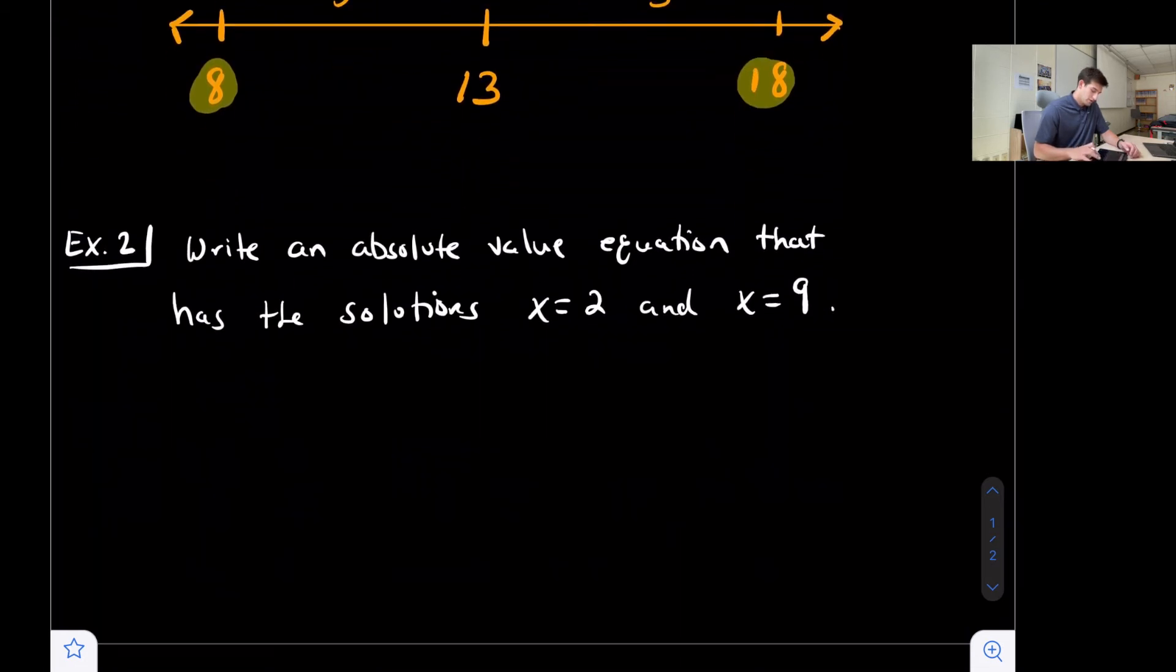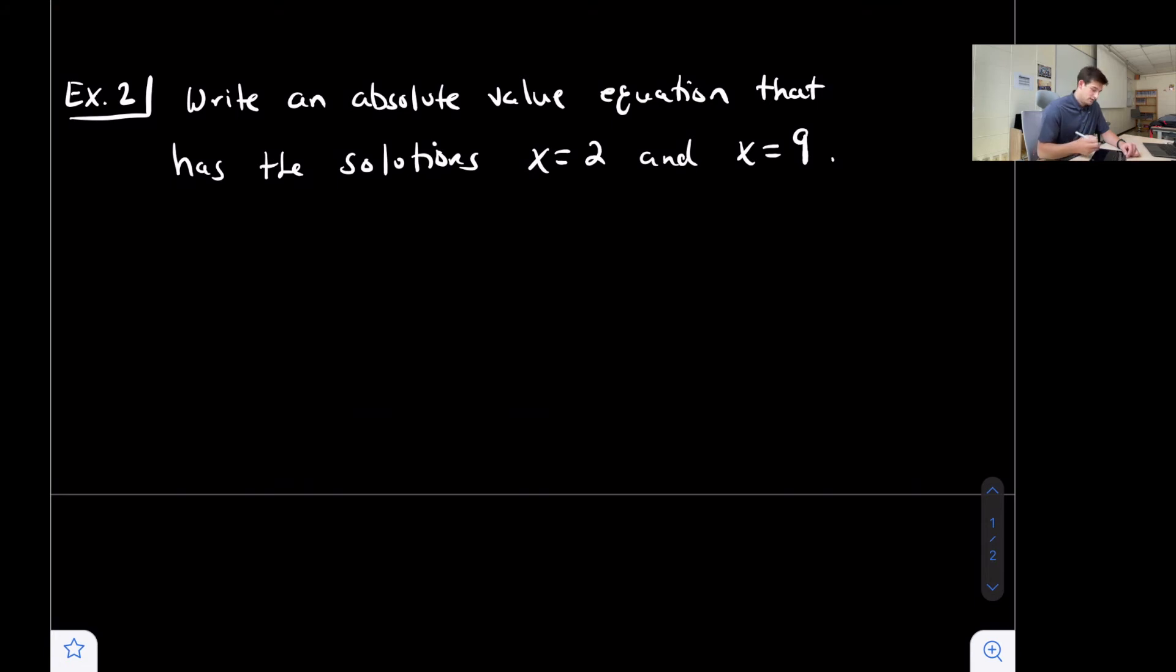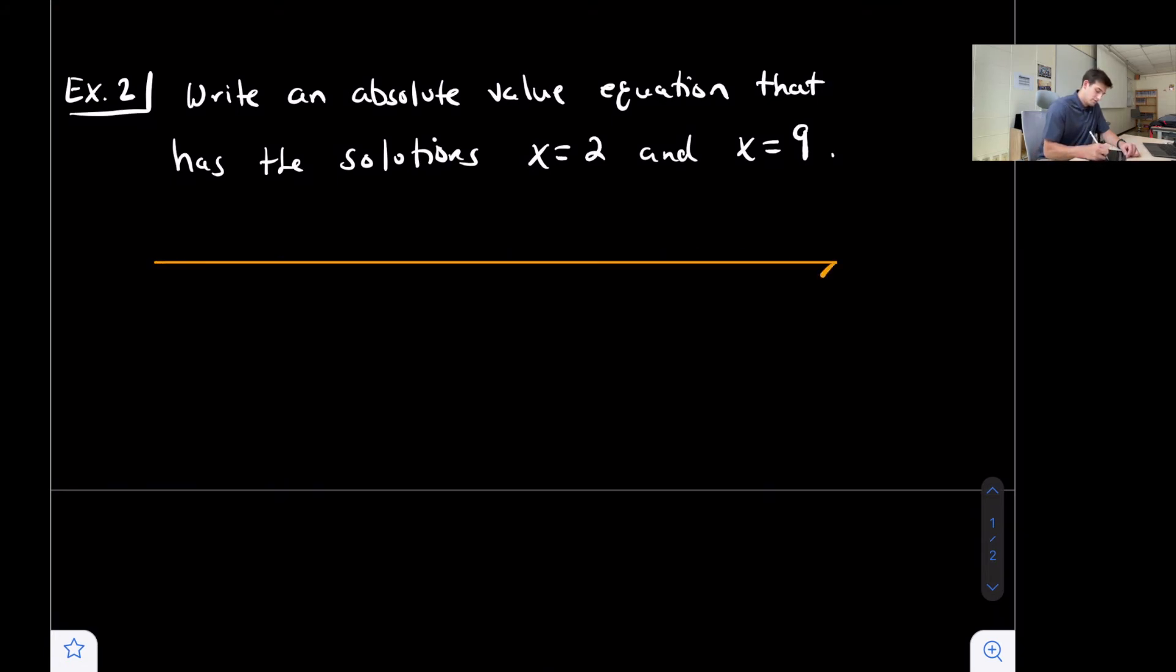Let's do one more example. Write an absolute value equation that has the solutions 2 and 9. Once again, let's draw a number line, list our two solutions 2 and 9, and now let's find the number that's right in between. 9 plus 2 we get 11, 11 divided by 2 would be 5.5.